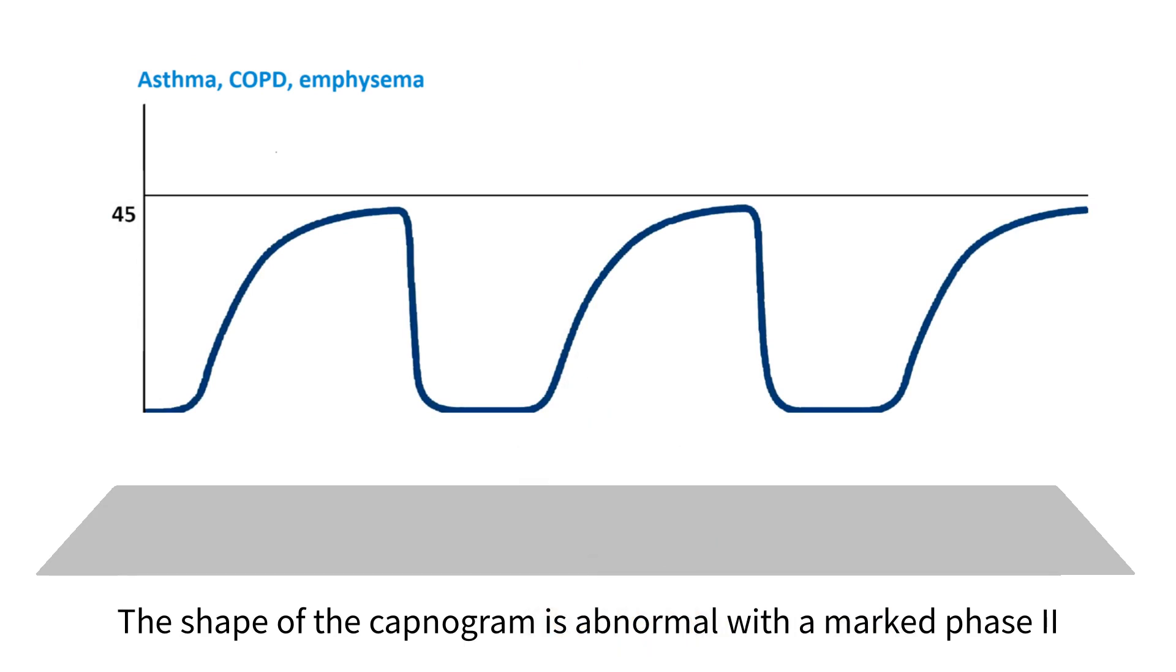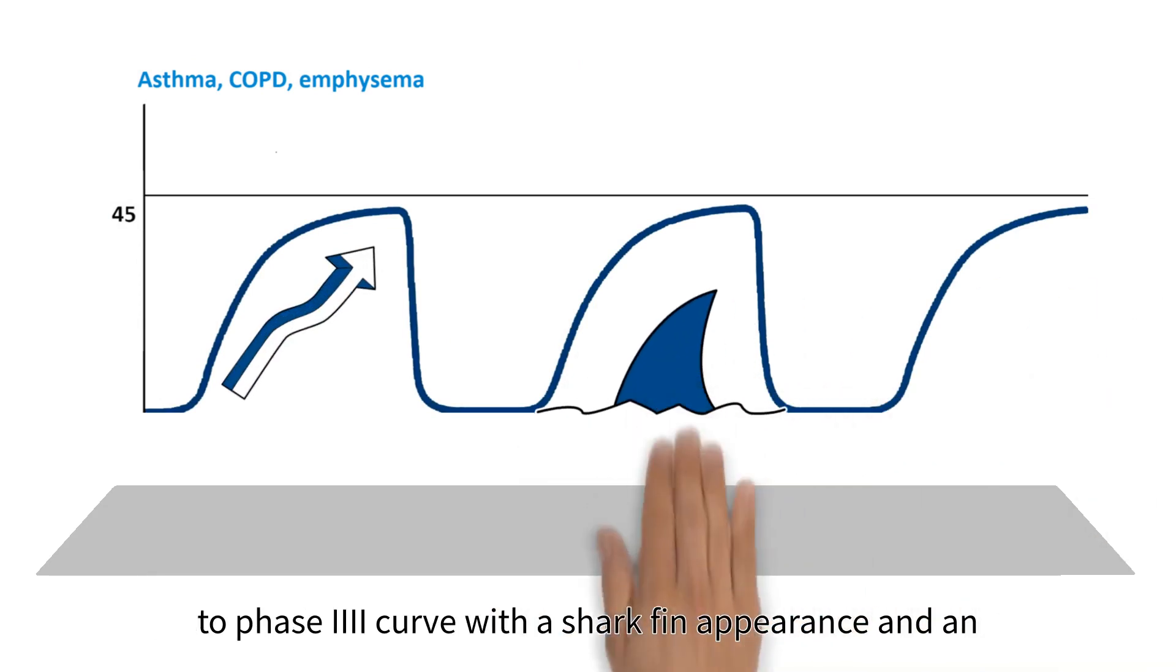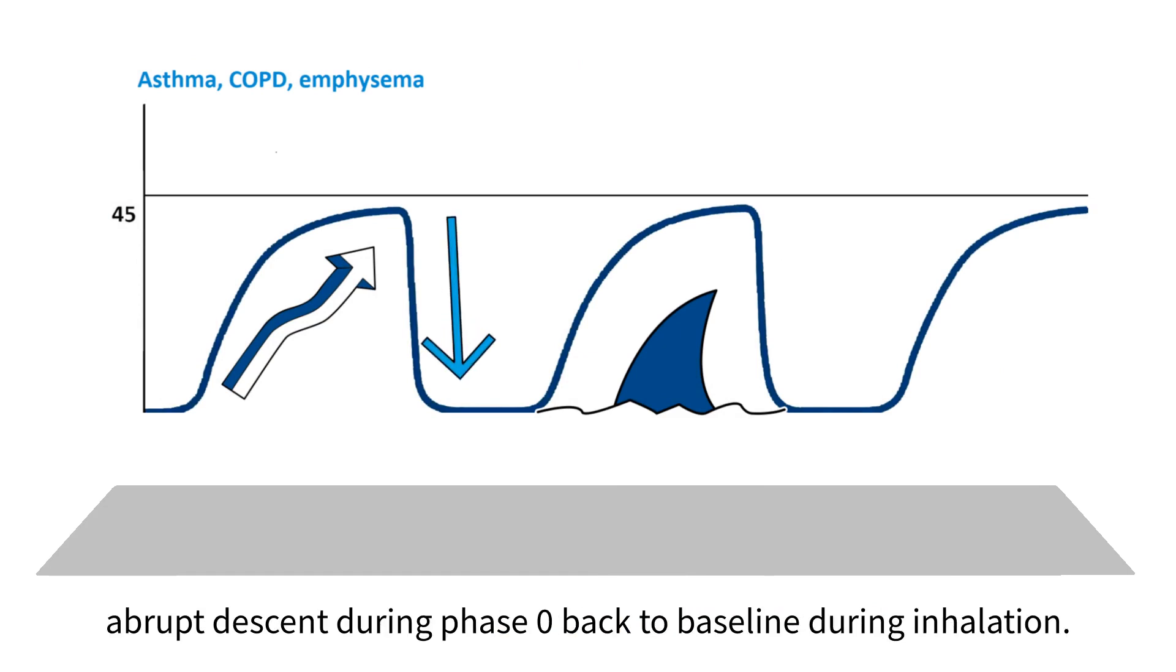The shape of the capnogram is abnormal with a marked phase 2 to phase 3 curve with a shark fin appearance and an abrupt descent during phase 0 back to baseline during inhalation.